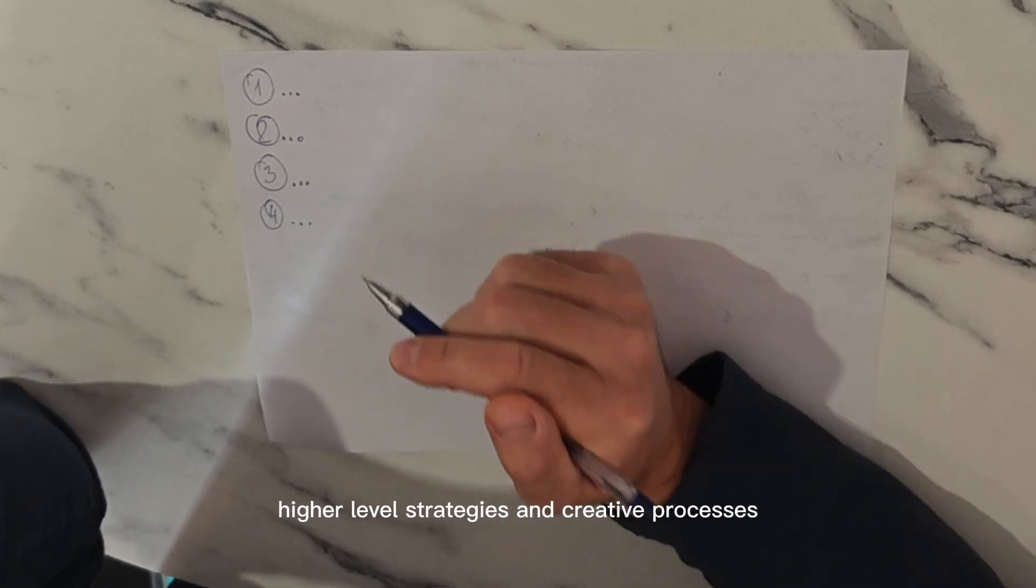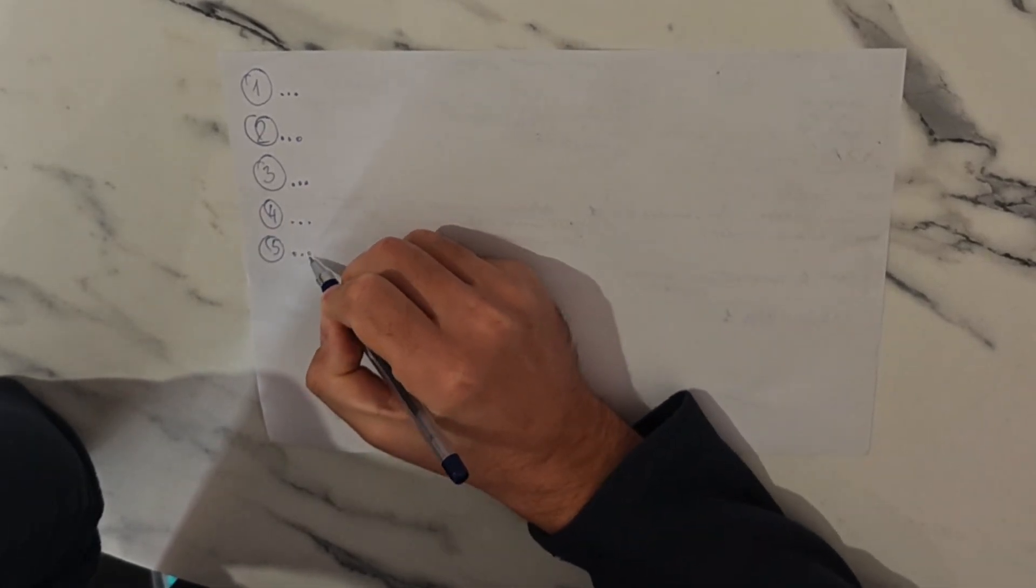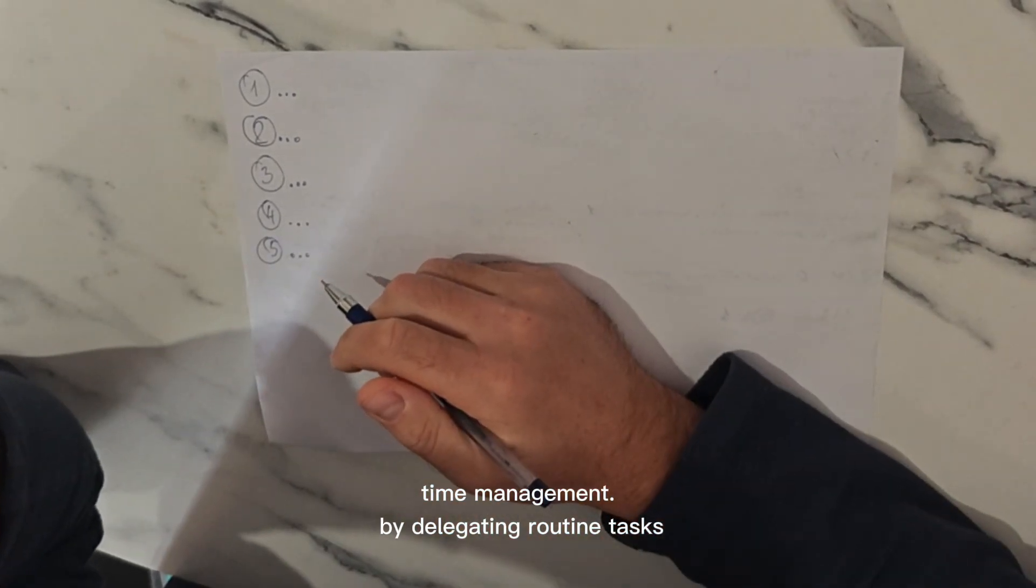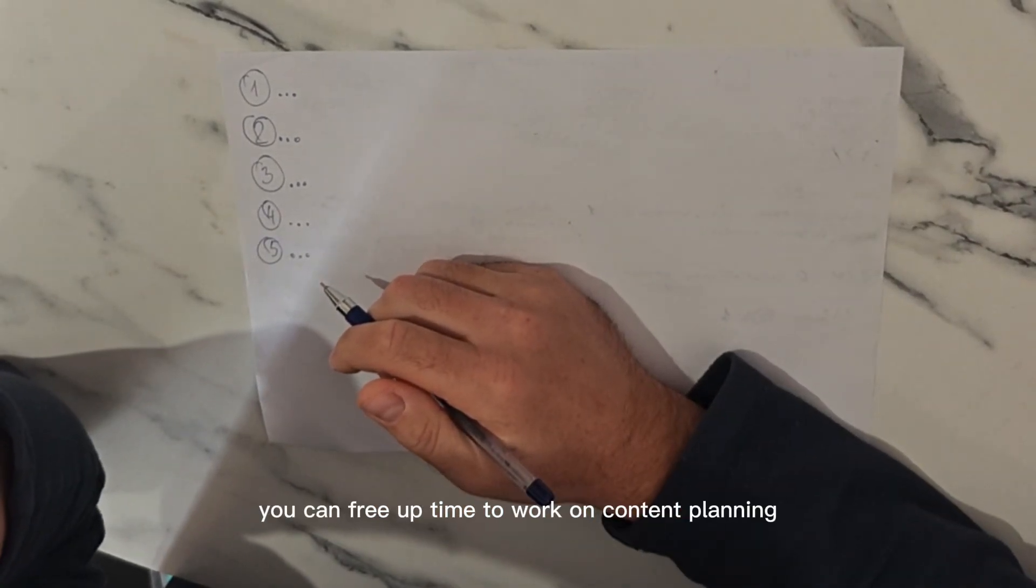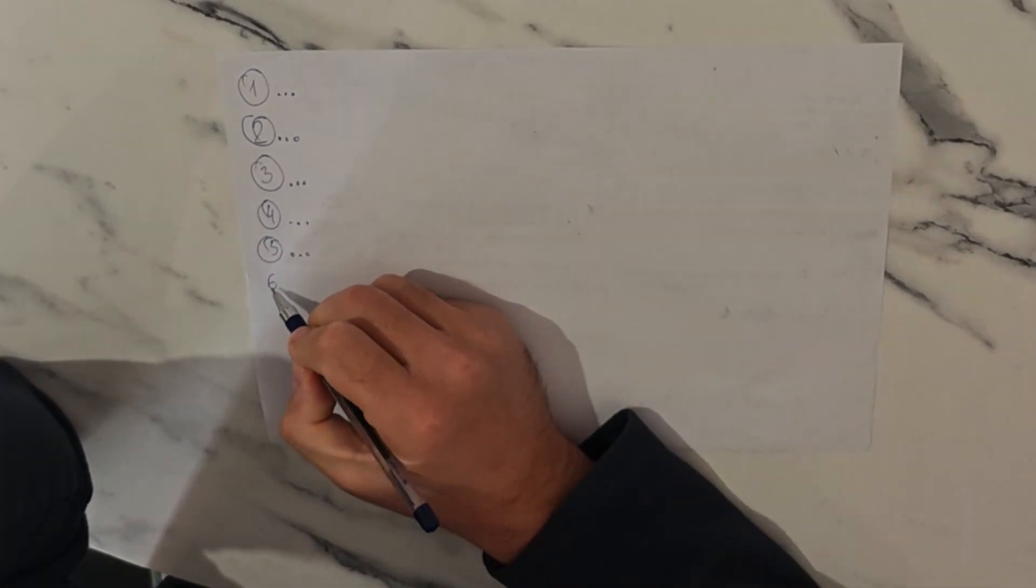Five - Time management: By delegating routine tasks, you can free up time to work on content planning, audience management, or exploring new monetization strategies.